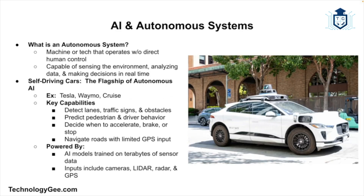Now let's talk about AI and autonomous systems. An autonomous system is any machine or technology that can operate without direct human control. That doesn't mean it's running wild, but it can assess its environment and make decisions on the fly — and AI makes all of this possible. Self-driving cars are probably the most famous autonomous system. Companies like Tesla, Waymo, and Cruise are pouring billions into making cars that can detect lanes, signs, and obstacles, predict pedestrian and driver behavior, and decide when to speed up, slow down, or stop — even navigating unfamiliar roads without GPS micromanagement.